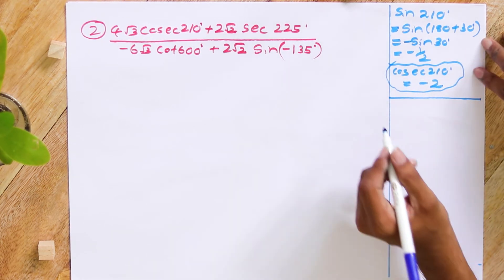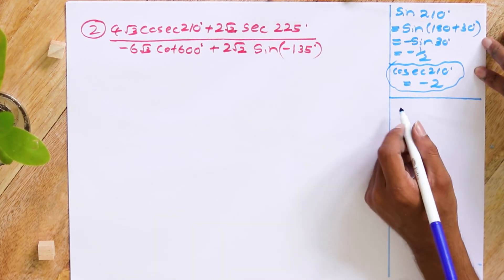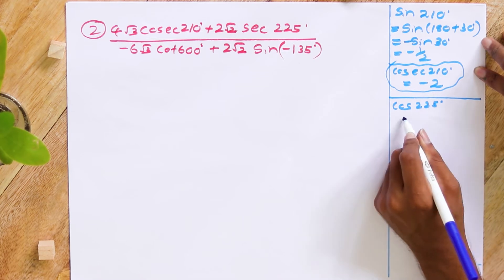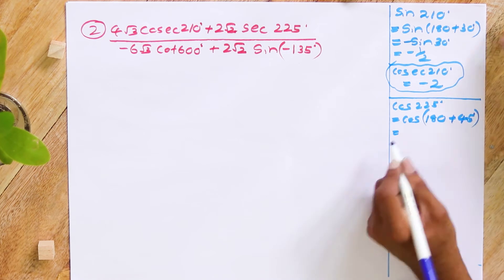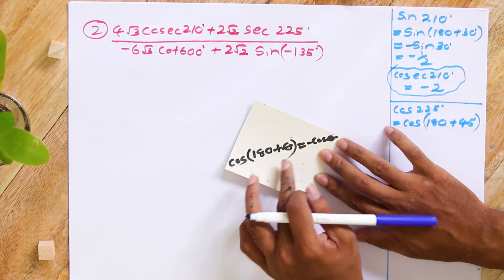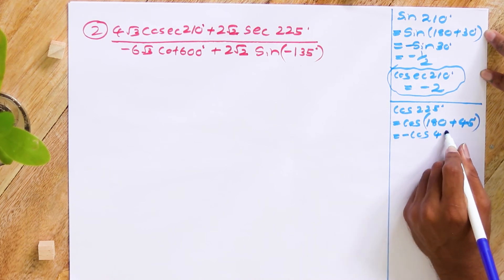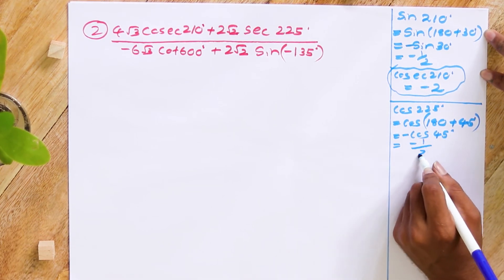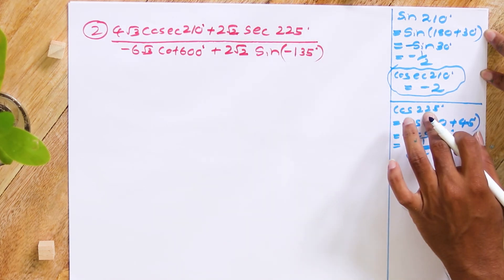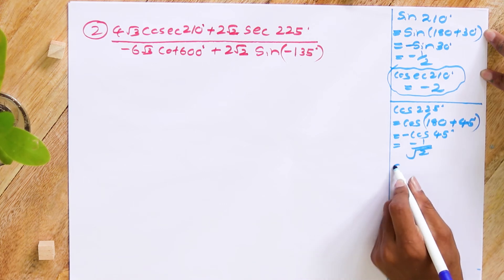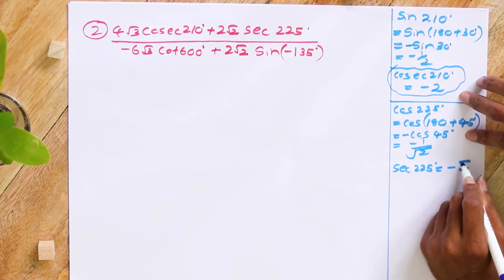Moving on to sec 225°. Since sec is the reciprocal of cosine, I'll find cos 225°. Cos 225° = cos(180° + 45°), and since cos(180° + θ) = -cos θ, this gives -cos 45° = -1/√2. Therefore sec 225°, the reciprocal of -1/√2, equals -√2.